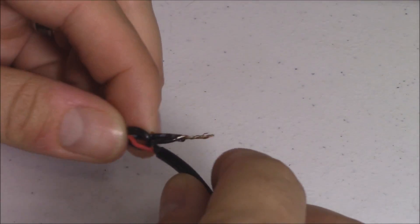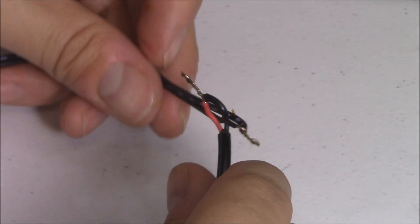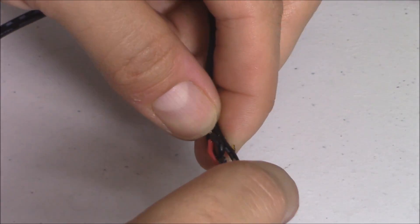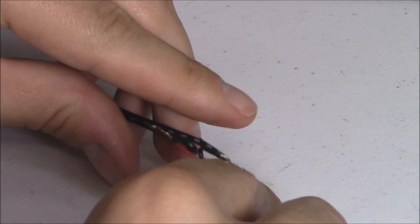You want to fold this side down like that. And this side like that. You want to keep them separated. So the positive side is going to face down. And then this side, the negative, is going to face the other way. And we're going to wrap it.